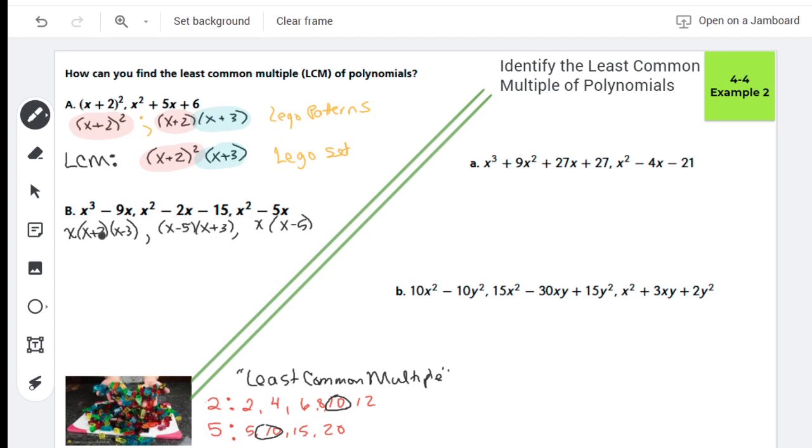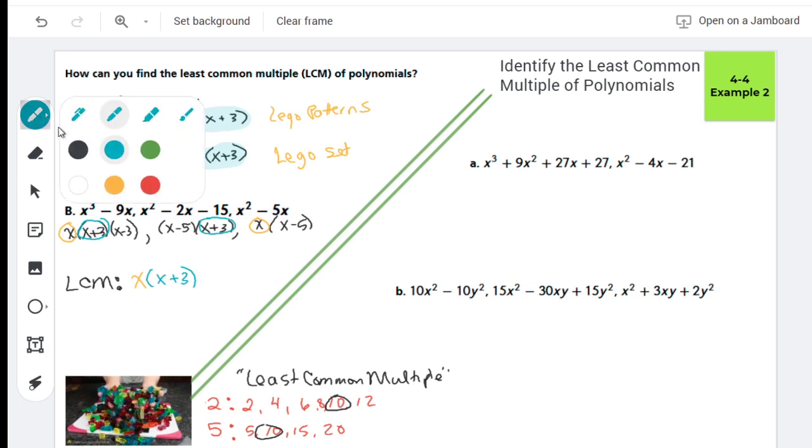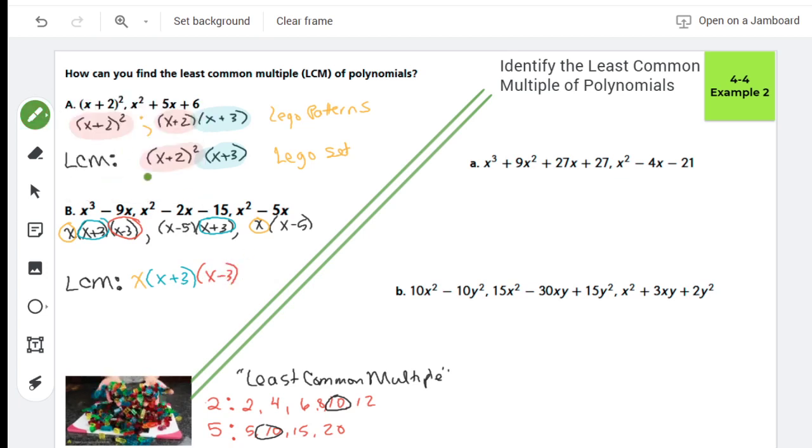So these are the kinds of Legos that I need to add to my Lego set, essentially, or to my LCM. So checking it out, I know that I need an x, so I'm going to go ahead and put an x in here. I know that I need an x plus 3. I know that I'm going to need an x minus 3. And I know that I'm going to need an x minus 5. And so my LCM is all four of those factors altogether.